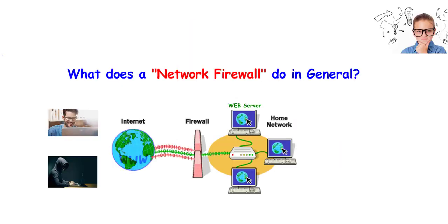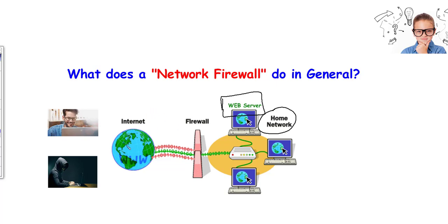What does a network firewall do in general? Whenever you deploy a firewall, the first thing you need from it is security — from attackers, people who are trying to compromise your systems. For example, you have a home network or company with a web server, and you want people to access it from the internet. But someone is trying to get inside your network and hack the server.